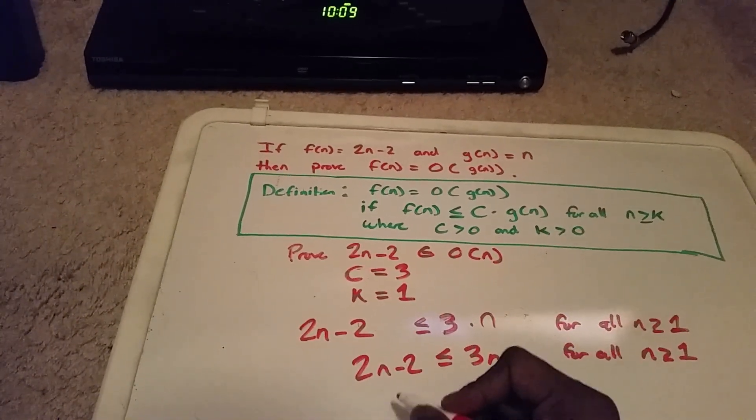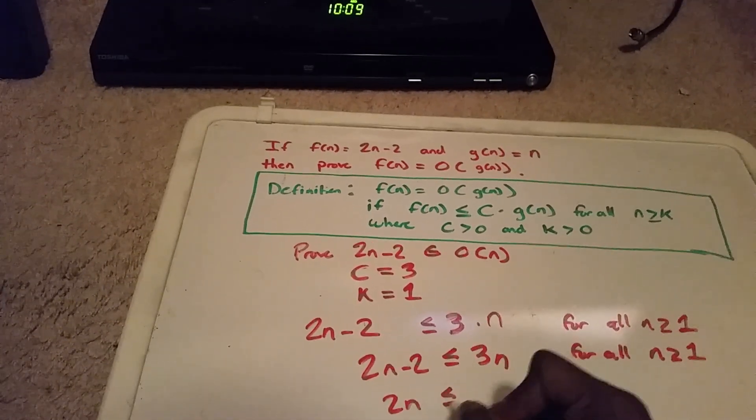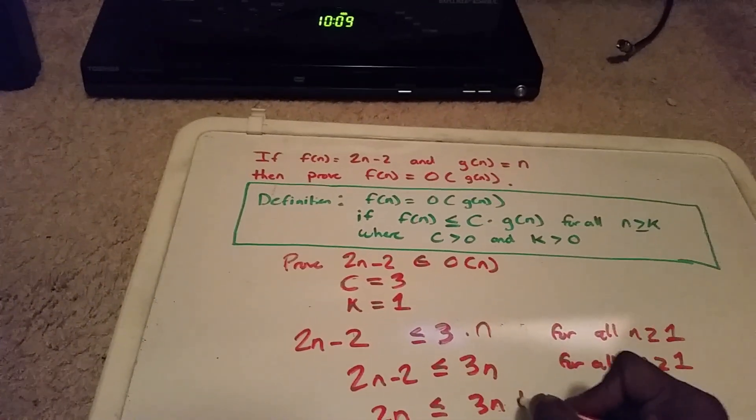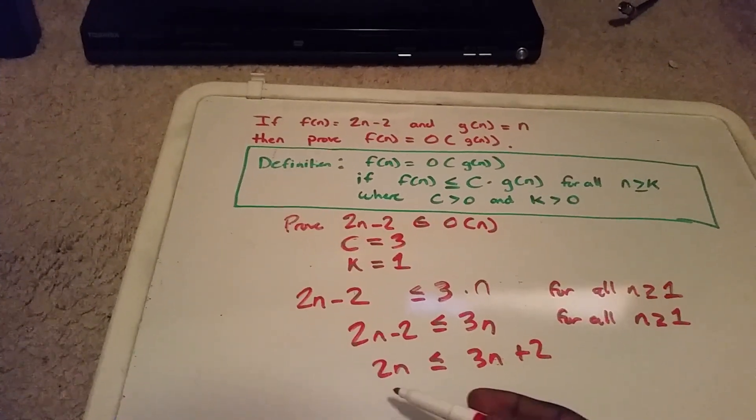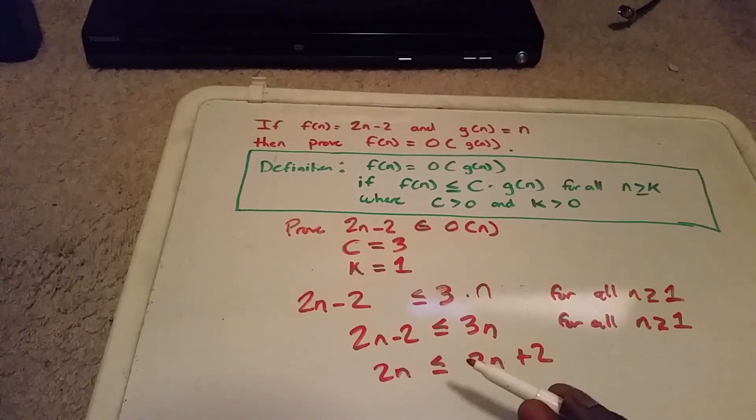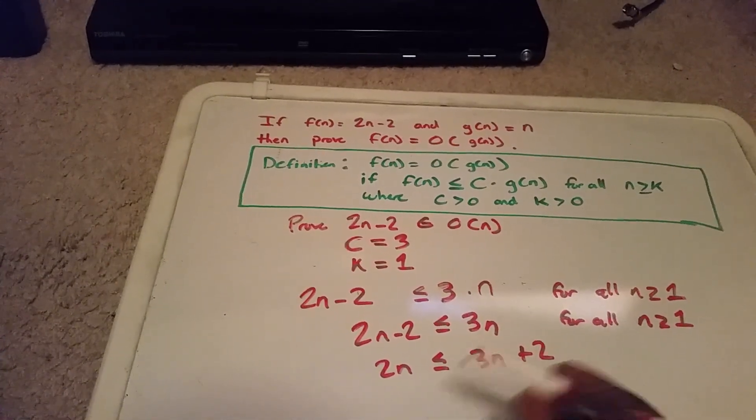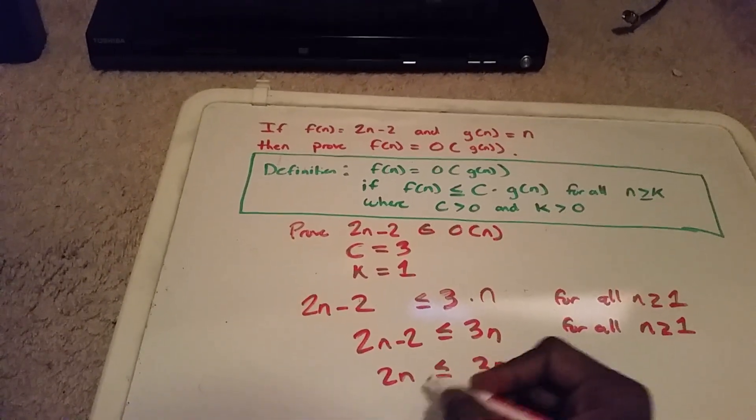What we can do here is add 2 to the other side, and now we can divide by 2n.